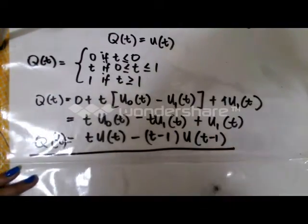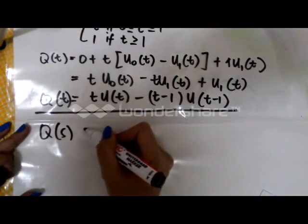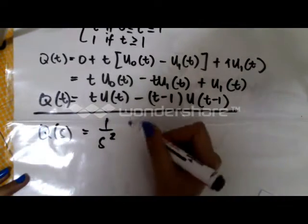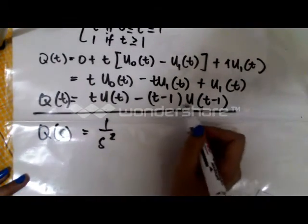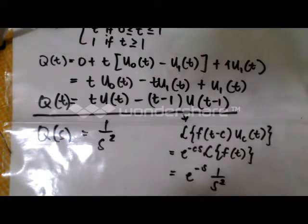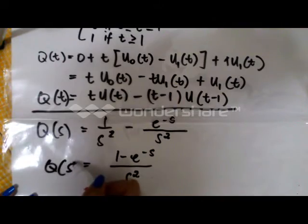This is now our Q(t). The Laplace transform of t is 1 over s squared, based from the Laplace table. For the shifted term (t − 1)·u(t − 1), based on the second shifting theorem, the Laplace transform is e^(−s) times the Laplace transform of f(t), where f(t) = t, giving 1 over s squared. Simplifying, we have Q(s) equal to (1 − e^(−s)) over s squared. This is our Q(s).